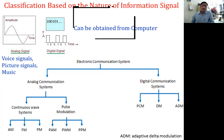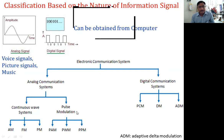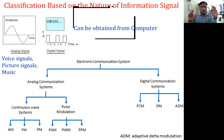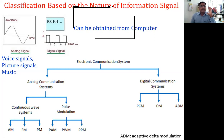Analog communication systems are categorized into two types. When we have a continuous sinusoidal wave, we have three types of systems: amplitude modulated wave, frequency modulated wave, and phase modulated wave. These are the continuous wave systems under analog communication.